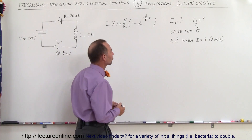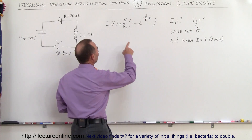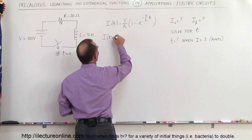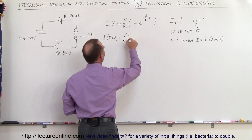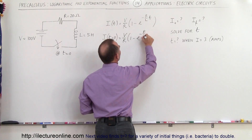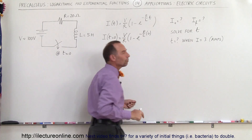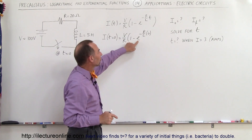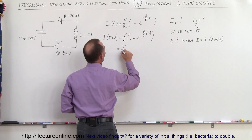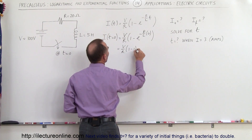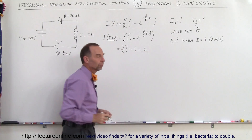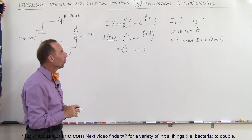What's the initial current? The initial current is when time is equal to zero. So I at time zero equals V over R times (1 minus E to the minus R over L times zero). Any exponent of zero gives 1, so E to the zero power is 1, which means this equals V over R times (1 minus 1), which equals 0. So when time is equal to zero, the current is equal to zero.